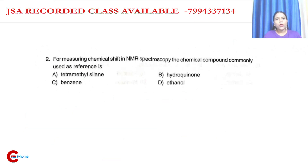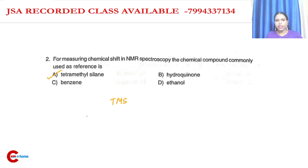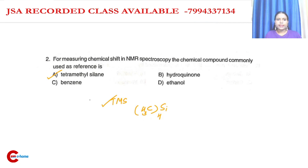Question number two: for measuring chemical shift in NMR spectroscopy, what chemical compound is used as a standard reference? It is Tetramethylsilane, TMS — (CH3)4.